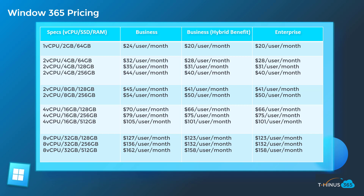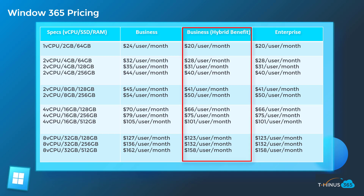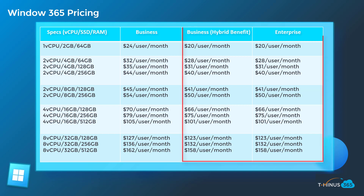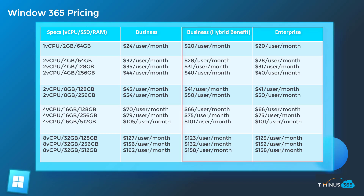The major thing you'll also notice is that there is a hybrid benefit for the business plan if you are running Windows 10 Pro as the operating system on the actual physical device. If you're running this on a Chromebook, for instance, you're not going to be eligible for that hybrid benefit. The hybrid benefit costs for business and the enterprise level pricing are the exact same.